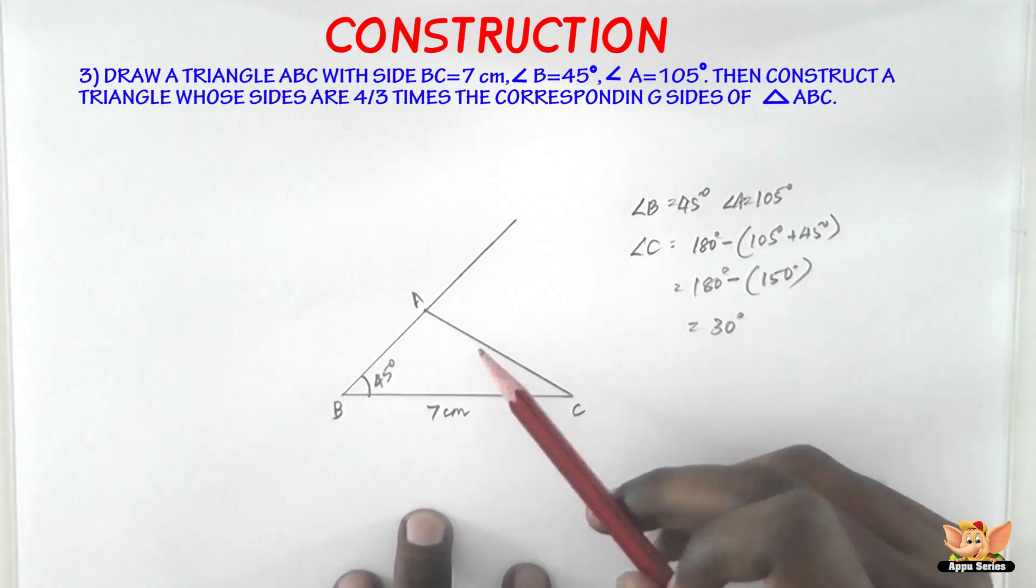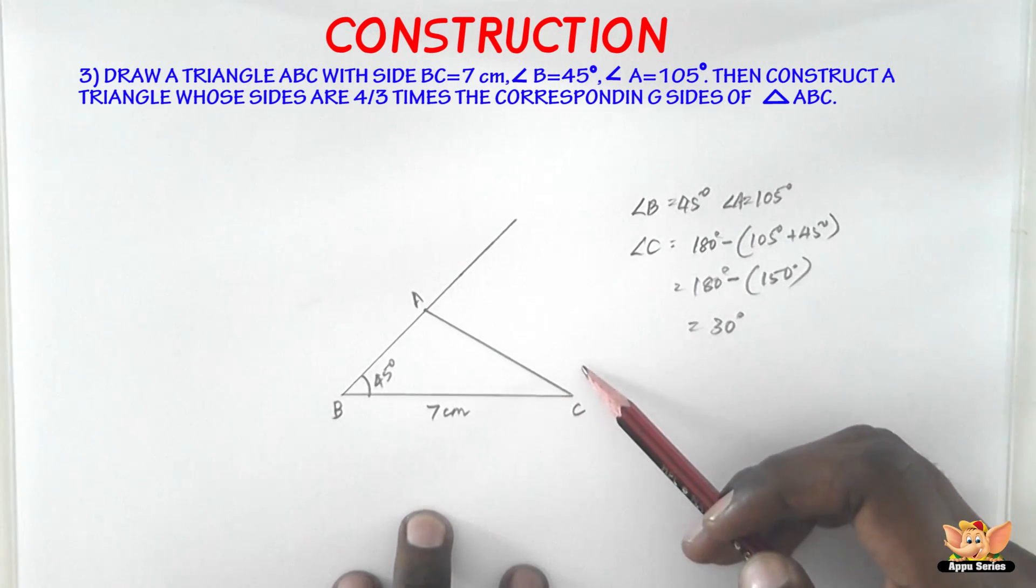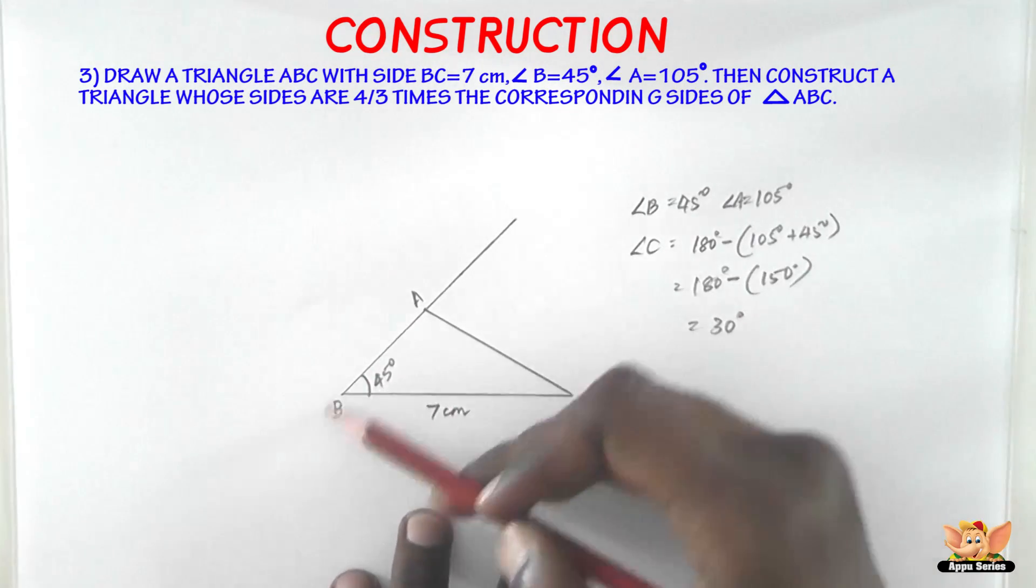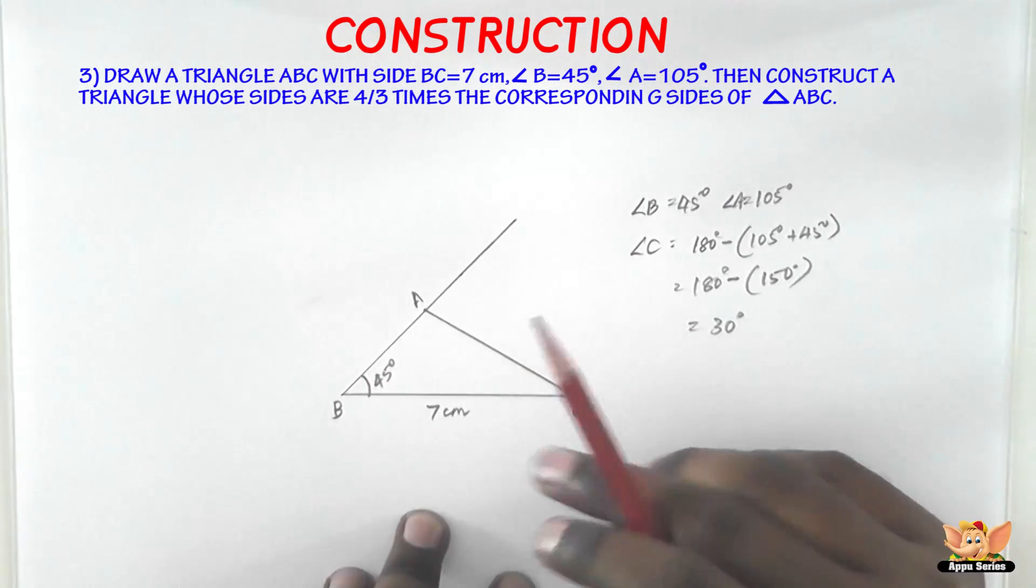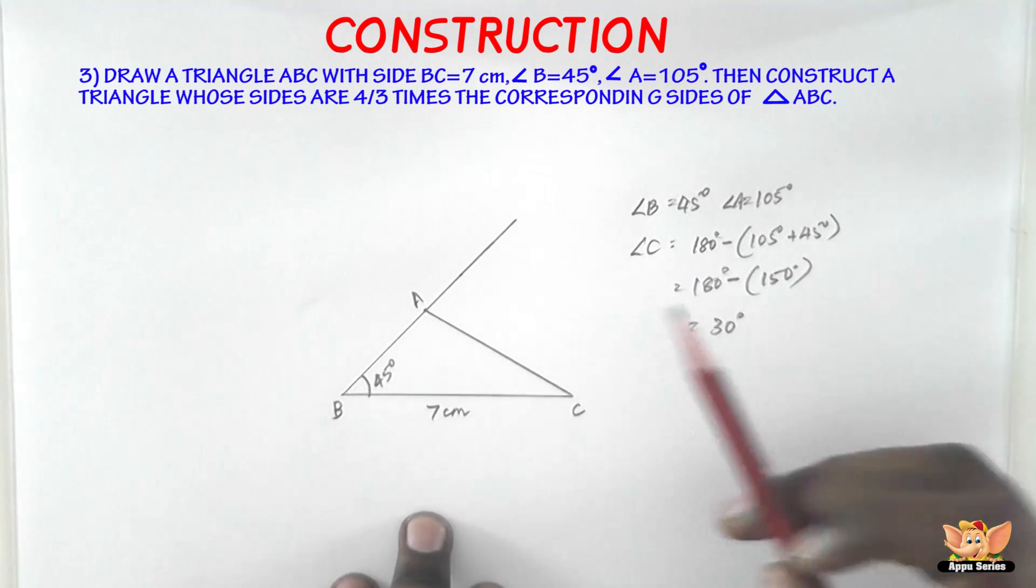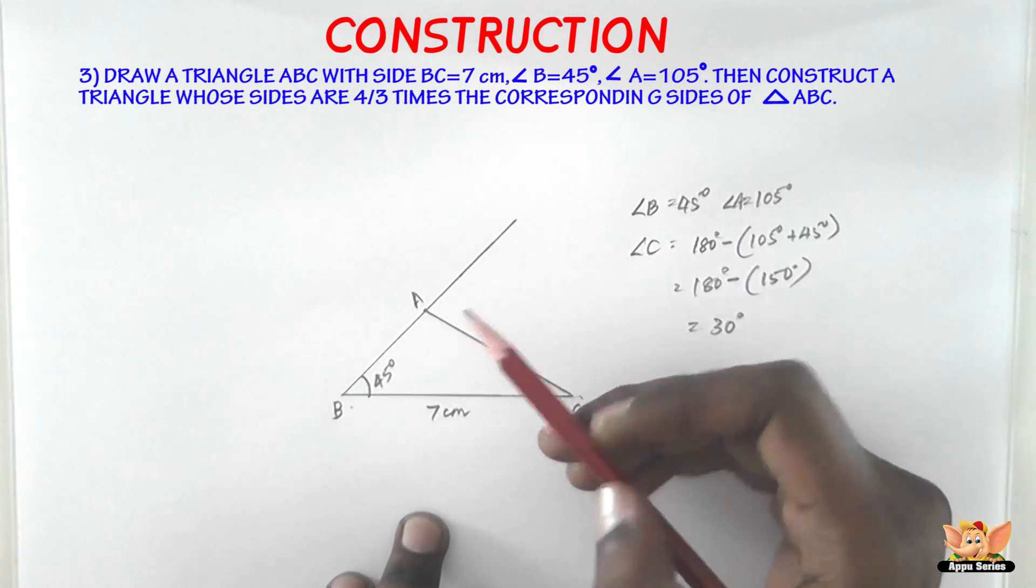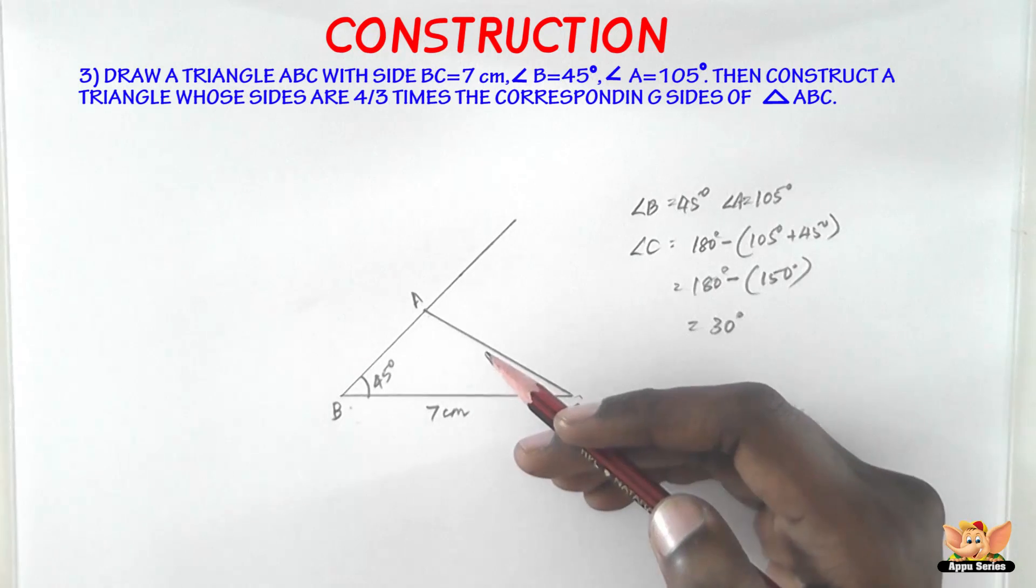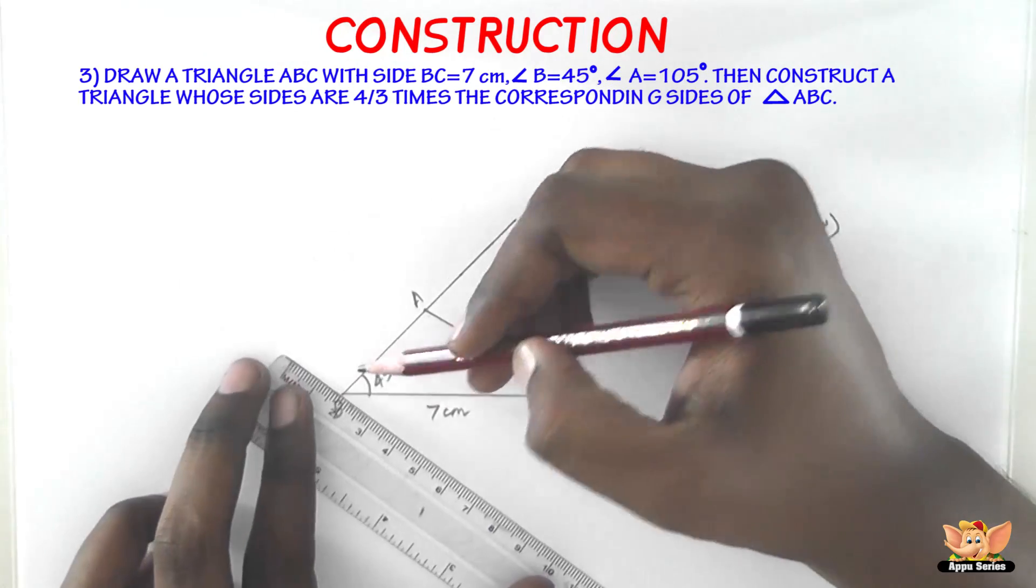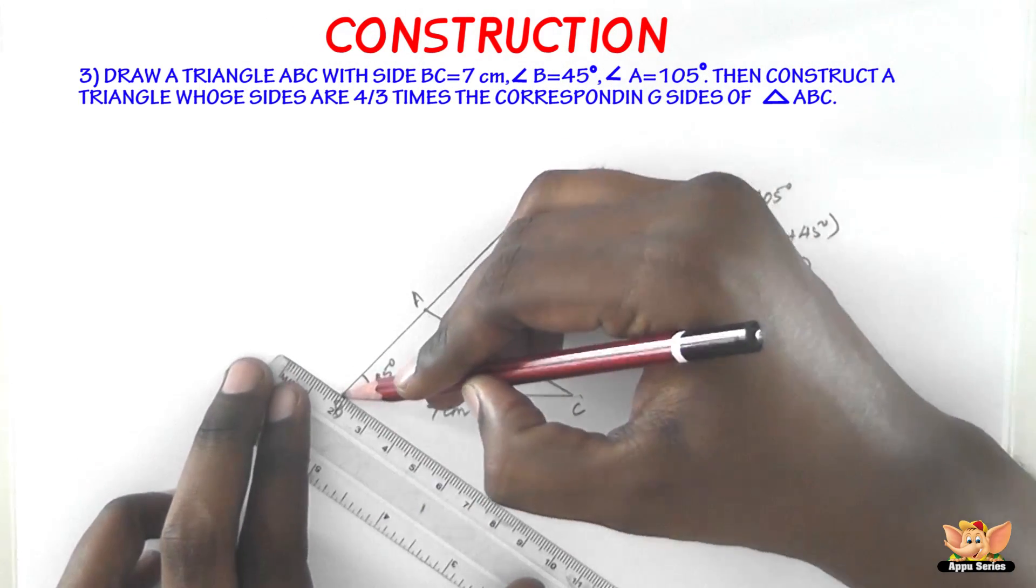Now we need to draw a similar triangle, a triangle that is similar to ABC but whose sides are 4 by 3 times of the corresponding sides of this triangle. So now the next step is to construct an acute angle CBZ at B on opposite side of vertex A of triangle ABC. So just construct an acute angle. You don't have to measure, just a random acute angle. So keep it here and make sure it's accurate, less than 90 degrees.